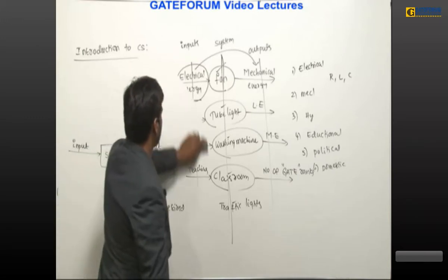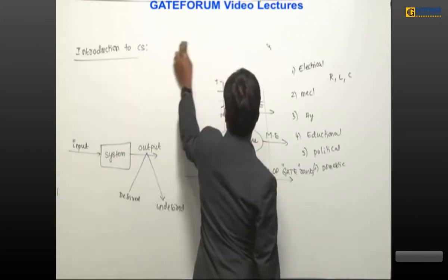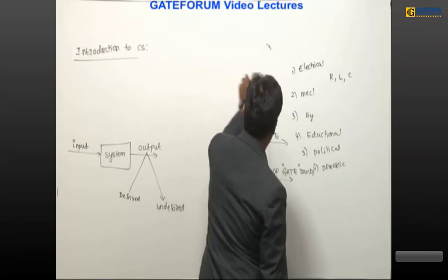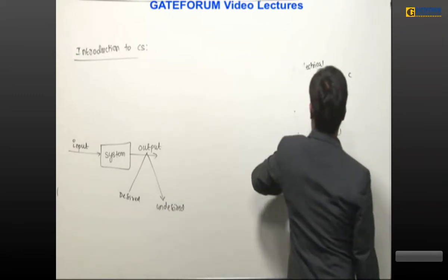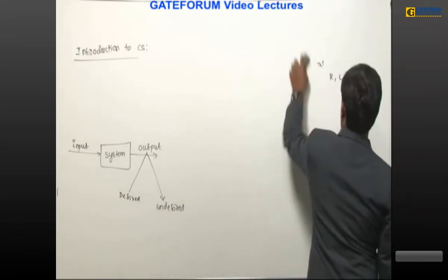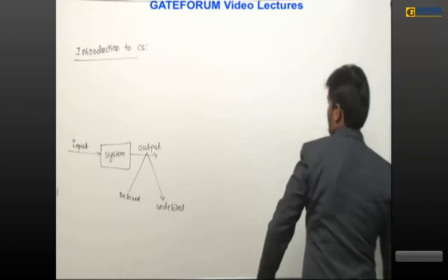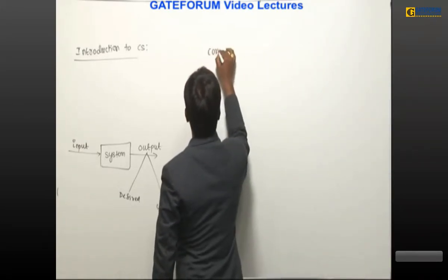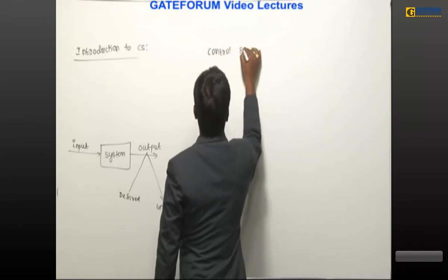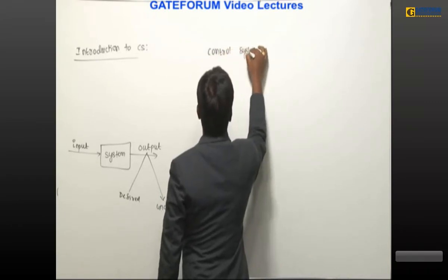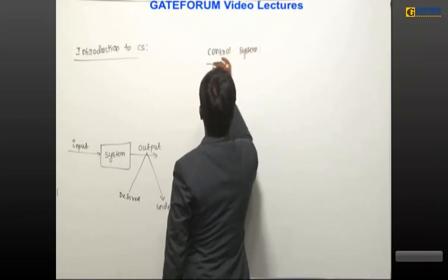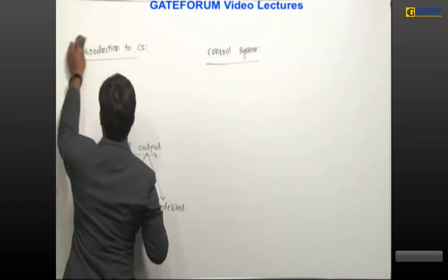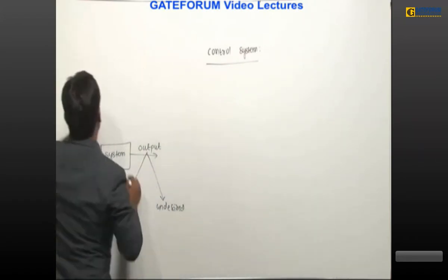In a system, output may be desired or undesired. Next we will understand what is meant by control system and what is the basic difference between a system and a control system.